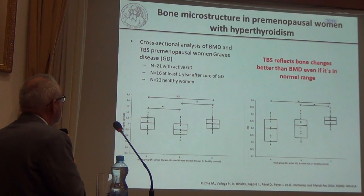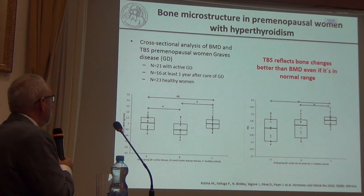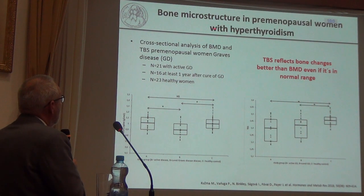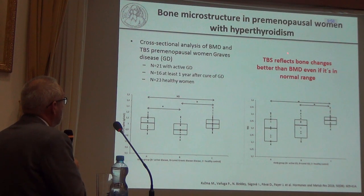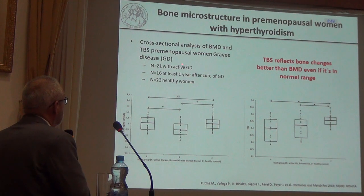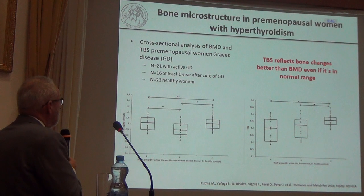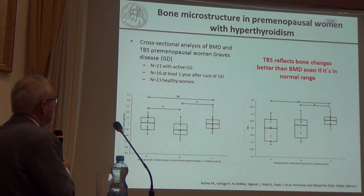In a recent study conducted in collaboration with Neil Binkley, bone mineral structure was assessed in premenopausal women with hyperthyroidism. TBS reflected bone status better than BMD in this group, making TBS a strong predictor of bone status in premenopausal women with hyperthyroidism.